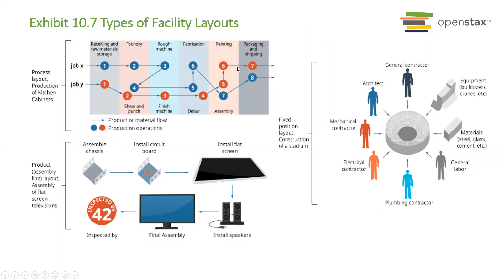The type of facility layout is very important in terms of how you work your process of producing your goods and product. For example, when you go to a Quiznos, Subway, or some sort of sandwich shop, there's a special layout needed to work in that area to produce sandwiches. There's a method for how the sandwiches are made — where the lettuce is, where the meats are, and where the oven is — all specifically laid out in order to produce the overall output: the sandwich that you as the customer paid for.